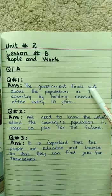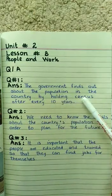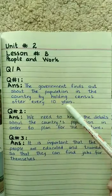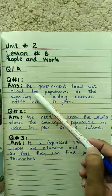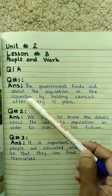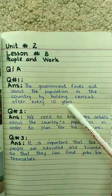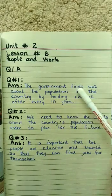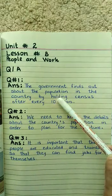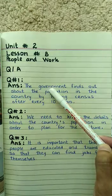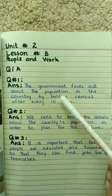The government finds out about the population in the country by holding census after every 10 years. Here, 'finds out' means 'to know', 'population' means people, and 'holding' means conducting. So the government knows about the people of Pakistan by conducting a census.